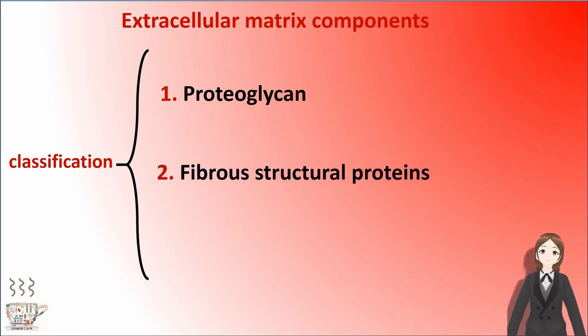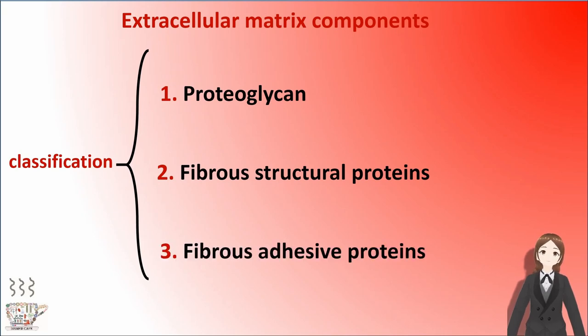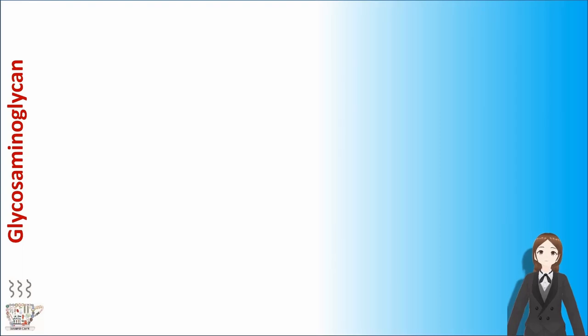The three subgroups are: proteoglycans, fibrous structural proteins, and fibrous adhesive proteins. The first component of the extracellular matrix is proteoglycan, but first I want to explain about glycosaminoglycans.